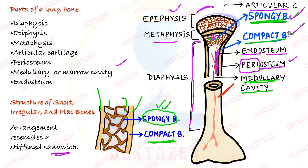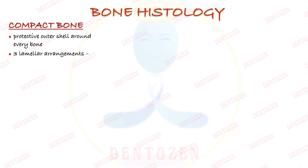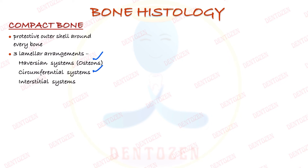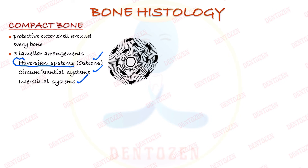Now let's see how compact bone and spongy bone appear under the microscope. Compact bone has three lamellar arrangements: the Haversian system, the circumferential system, and the interstitial system. In the Haversian system, bone is arranged in concentric layers. Osteocyte cells lie in cavities called lacunae at the junction of these layers, and their projections lie in thin spaces called canaliculi. These canaliculi connect to the central canal called the Haversian canal.